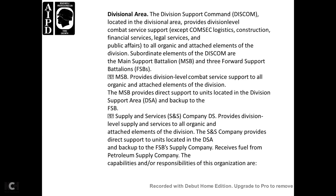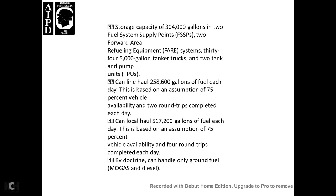The supply service company provides direct support for units located in the DSA, backing up the forward support battalion supply. It receives fuel from the petroleum supply company. The organization is capable of hauling 181,900 gallons of fuel each day, based on 75% vehicle availability and two round trips per day, using nine 5,000-gallon trucks. One mobile filling station will be established when required.